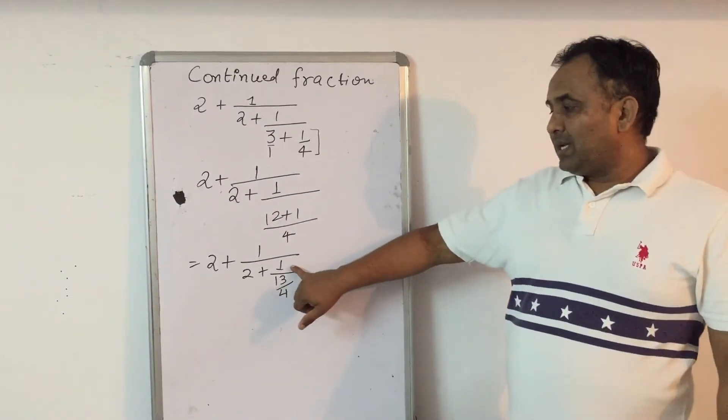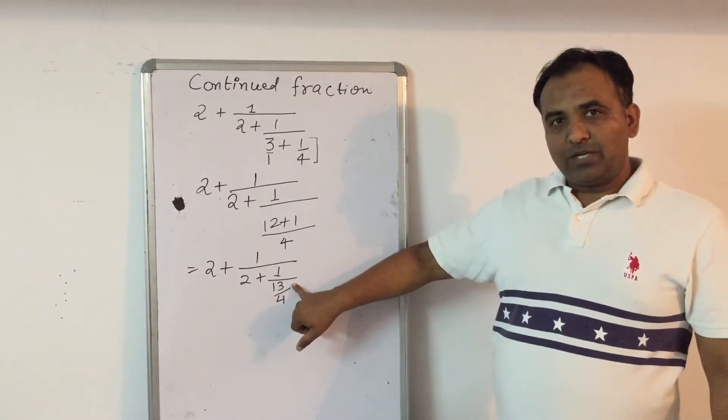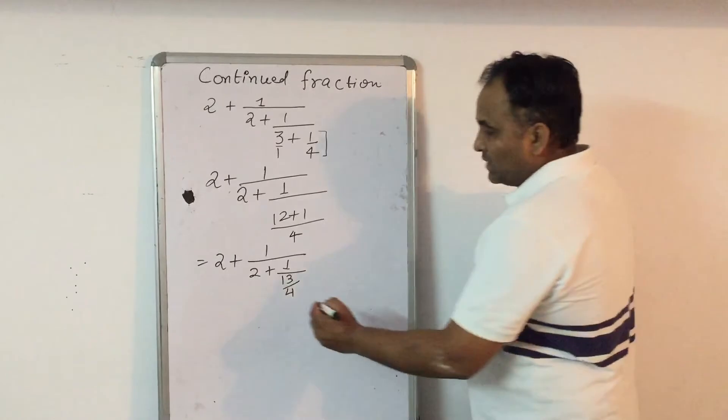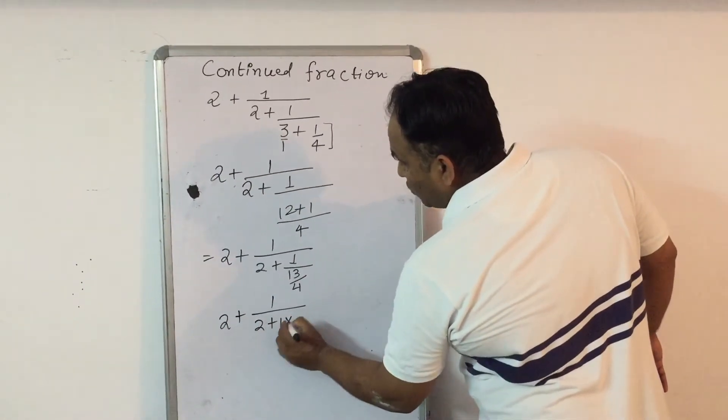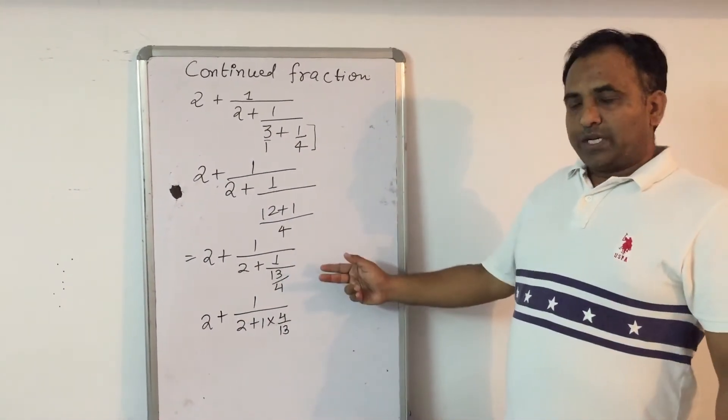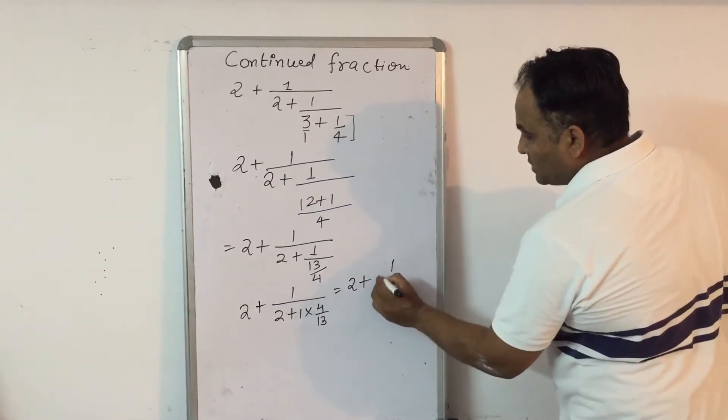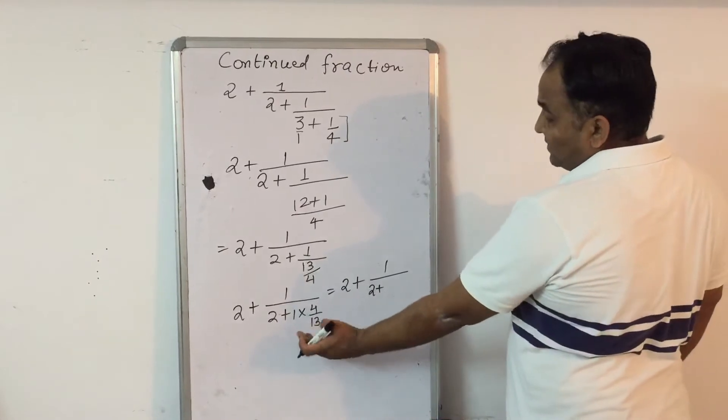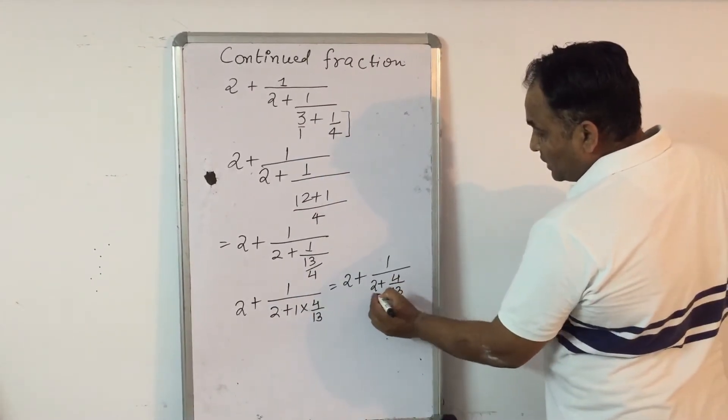Now, as you can see, this is itself a division and it has a fraction in its denominator. So this 13 upon 4 will be reciprocated and it will be written as 2 plus 1 upon 2 plus 1 into 4 upon 13. Now here, any fraction multiplied with 1 will give you the same result, 4 upon 13.